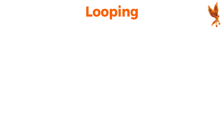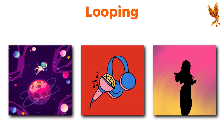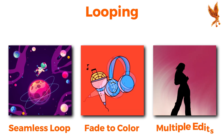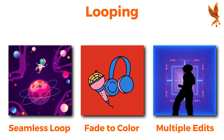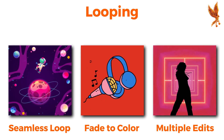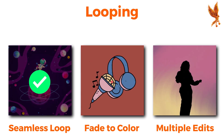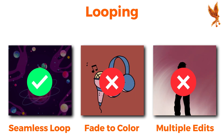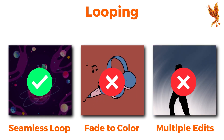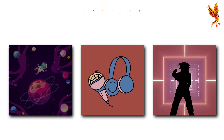The audience should view the animation without a noticeable transition from ending to beginning. Therefore, the full animation sequence must be in a seamless loop. Avoid using fade to color or multiple edits as a looping technique. These guidelines include standards and best practices to help you create visually consistent artwork. Get creative with Album Motion on Apple Music and let your music shine like never before.